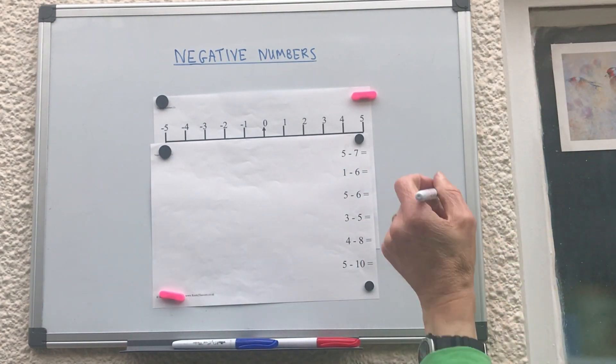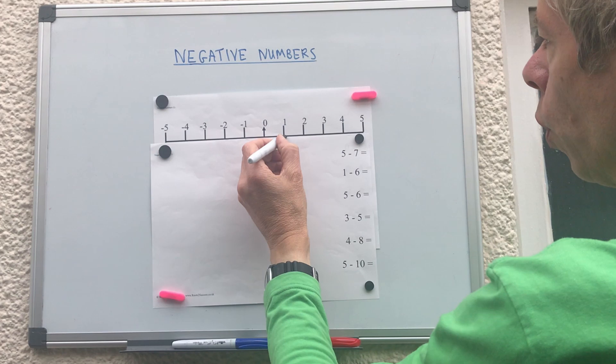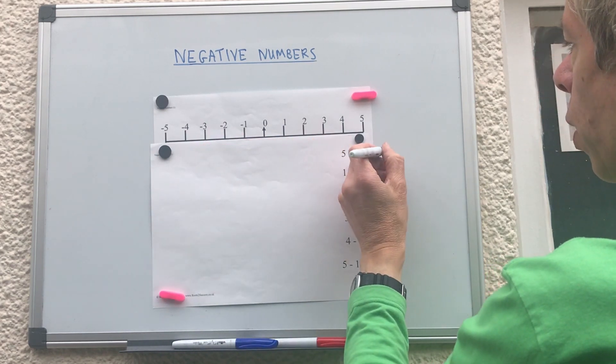So five take away seven. Start on the five, go back seven steps. One, two, three, four, five, six, seven, that will give us minus two.